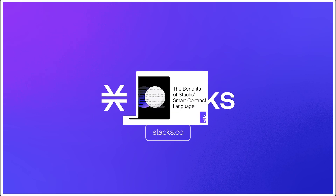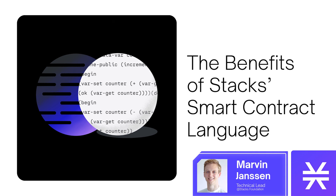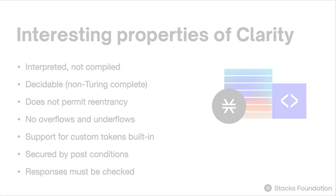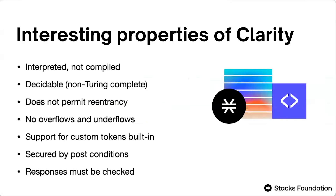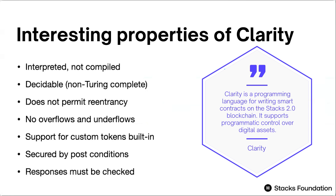Let's talk about clarity a little bit before we actually get into the language. The few properties we're going to talk about today: clarity is an interpreted language, it is not compiled. What that means is that when you write clarity code, you commit that code to the blockchain as is, as it has been written — this includes everything that you put in your source code.